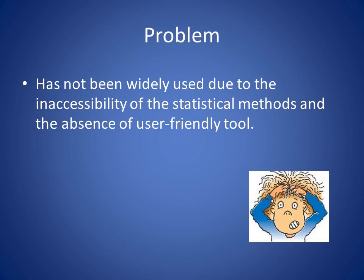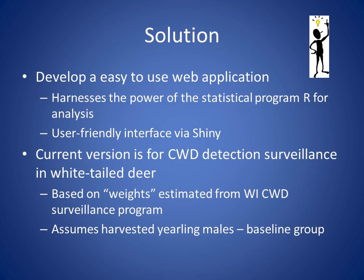The problem is that weighted surveillance hasn't been widely applied, despite more recent CWD detections in new areas. The statistical methods are relatively inaccessible and there's an absence of a user-friendly tool. The solution is a web application that coordinates the power of the statistical program R for analysis, but the user never has to interact with R directly. Instead, there's a user-friendly interface via Shiny, which builds off the R package. The current version is set up for white-tailed deer, with weights based on data from Wisconsin's CWD surveillance program in their endemic area, using harvested yearling males as the baseline group.